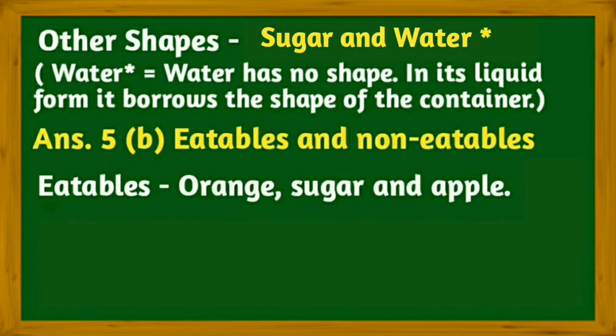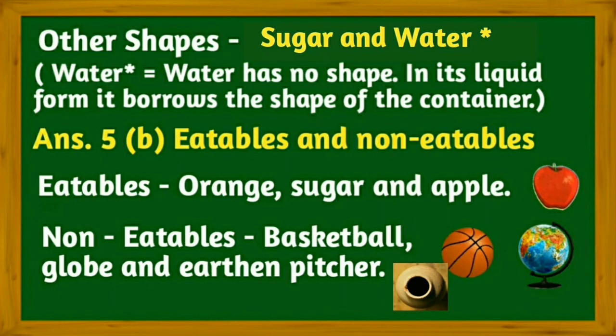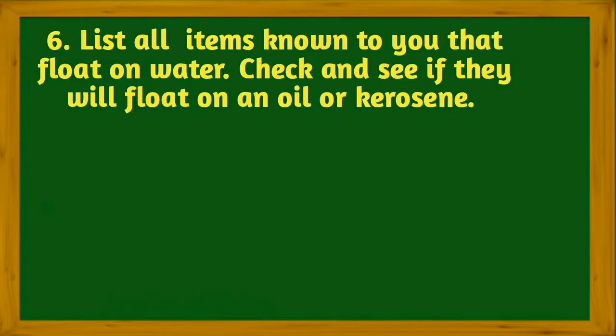Part B: Eatables and non-eatables. Eatables: orange, sugar, and apple. Non-eatables: basketball, globe, and earthen pitcher.